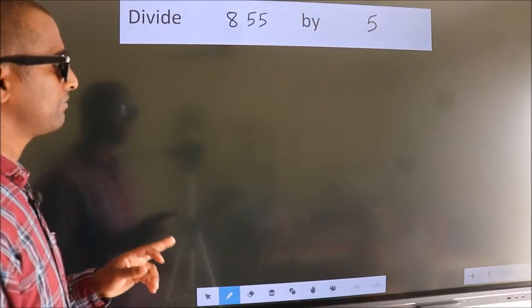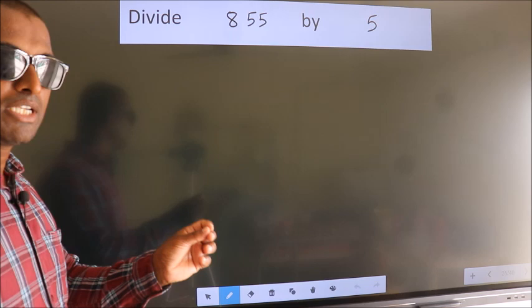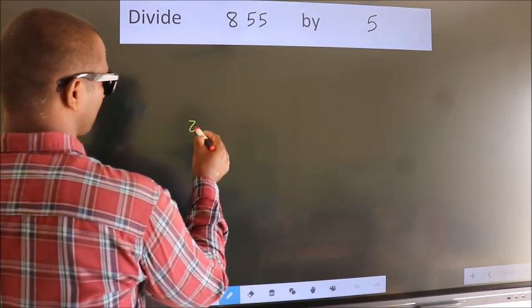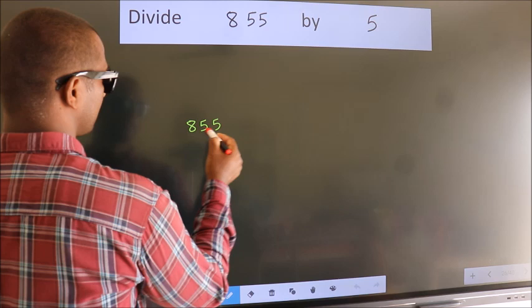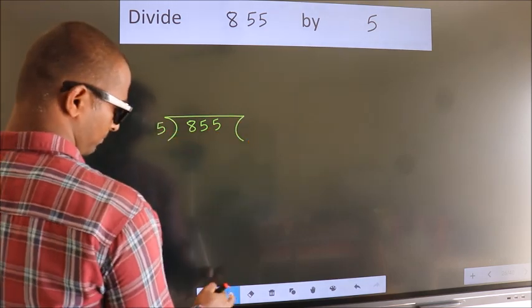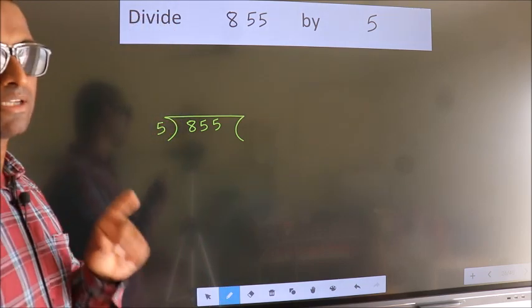Divide 855 by 5. To do this division, we should frame it in this way. 855 here, 5 here. This is your step 1.